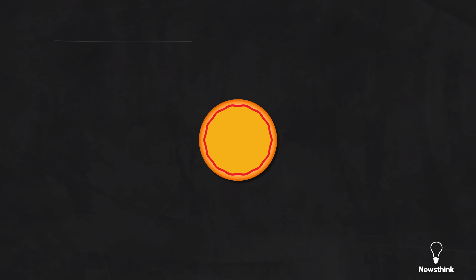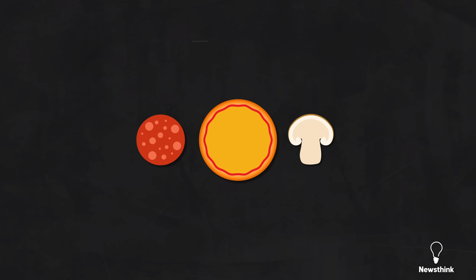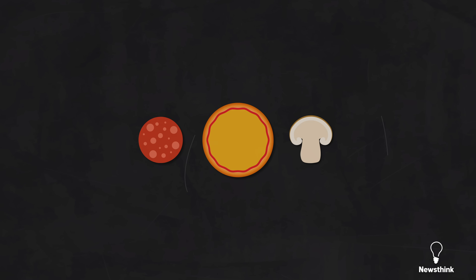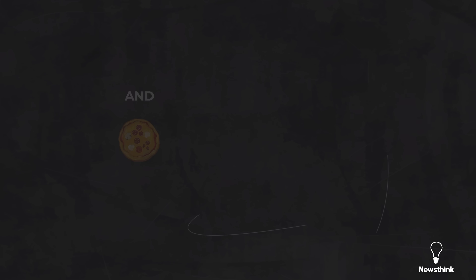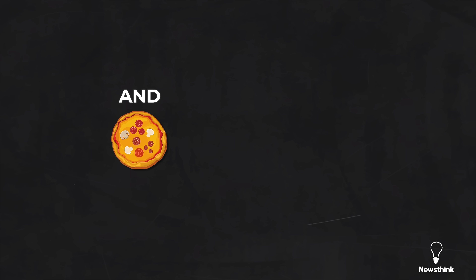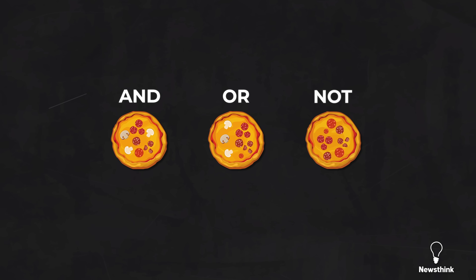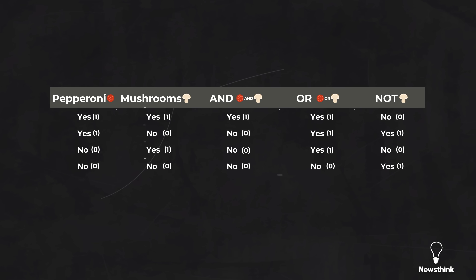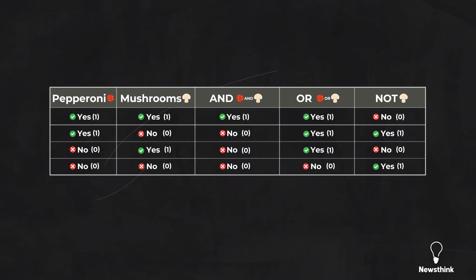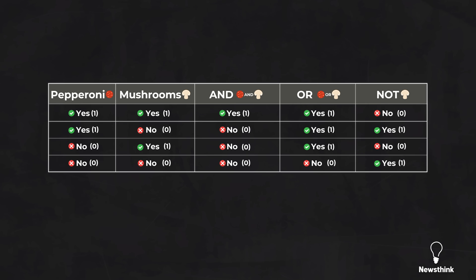Imagine you're ordering a pizza with two toppings: pepperoni and mushrooms. If you apply Boolean logic to your decision, there are three possibilities. You only order the pizza if it has both pepperoni and mushrooms. You will only order the pizza if it has pepperoni or mushrooms. You will not order the pizza if it has mushrooms. Each decision follows a simple yes or no rule, represented by ones — yes you order — and zeros — for no you do not.